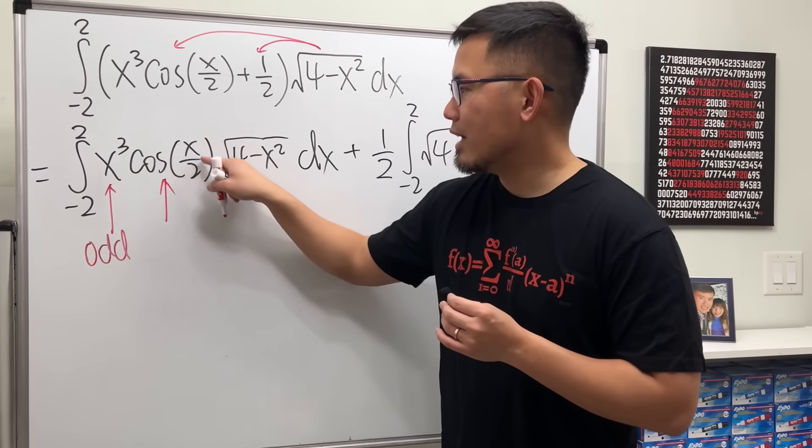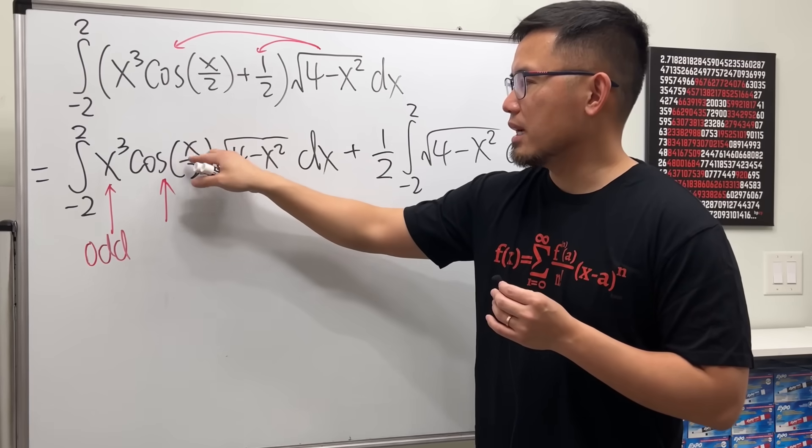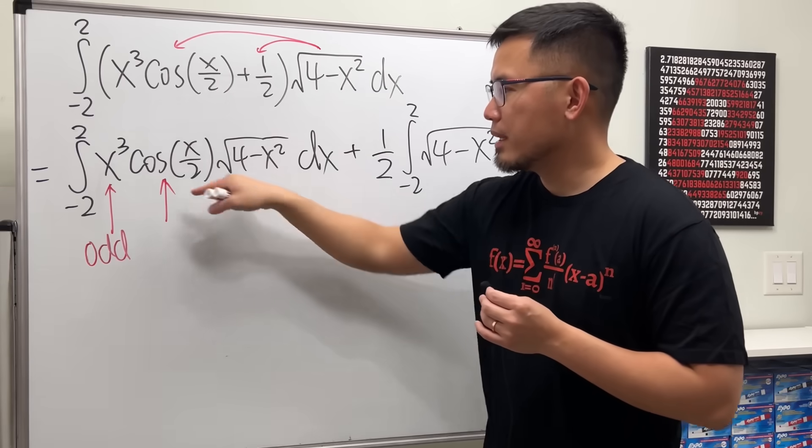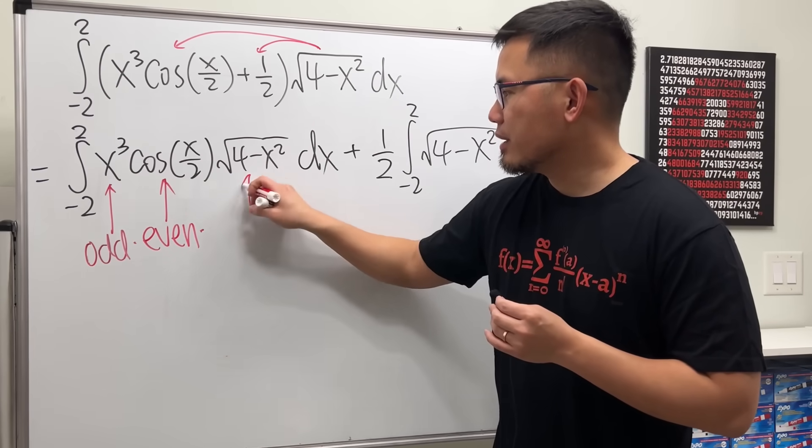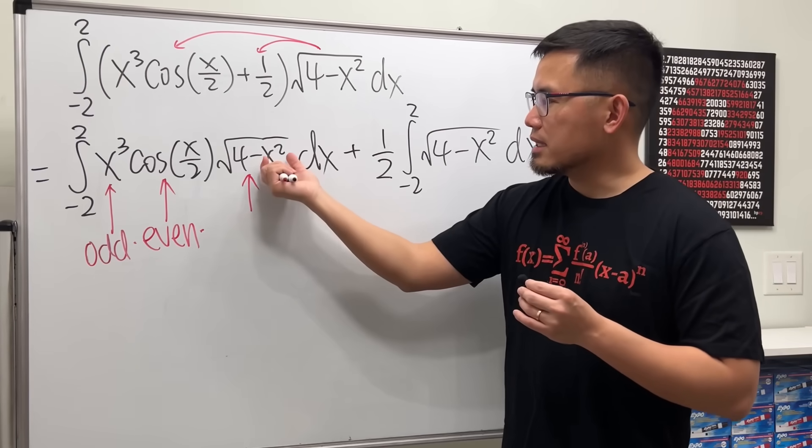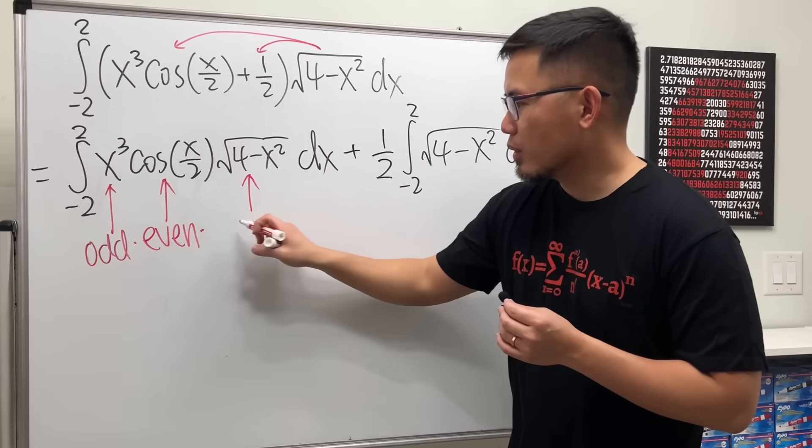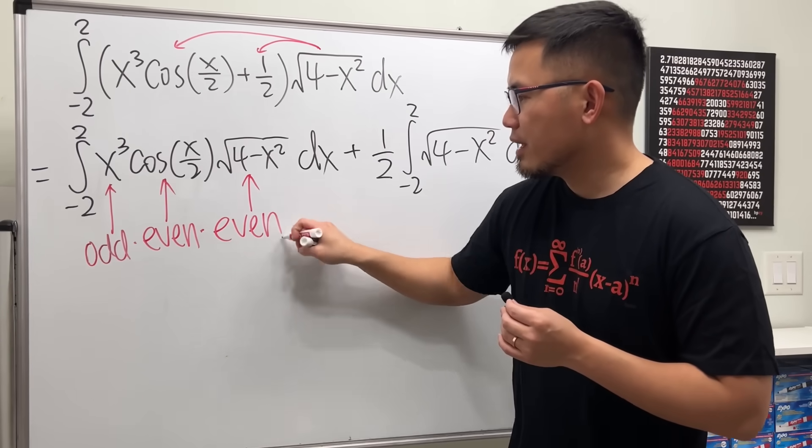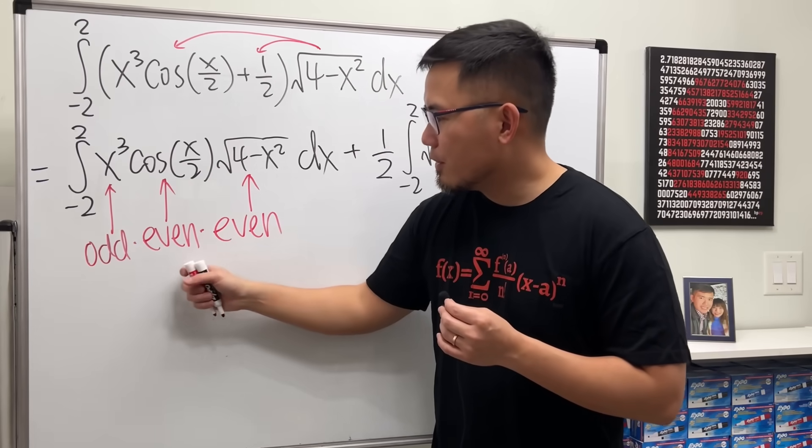Cosine of whatever inside here, this is just a normal input. If you put negative x inside, the negative doesn't matter, so this part is even. It's an even function. And then this right here is also even because if you put negative x inside of the x square, you get the original. This right here is also even.